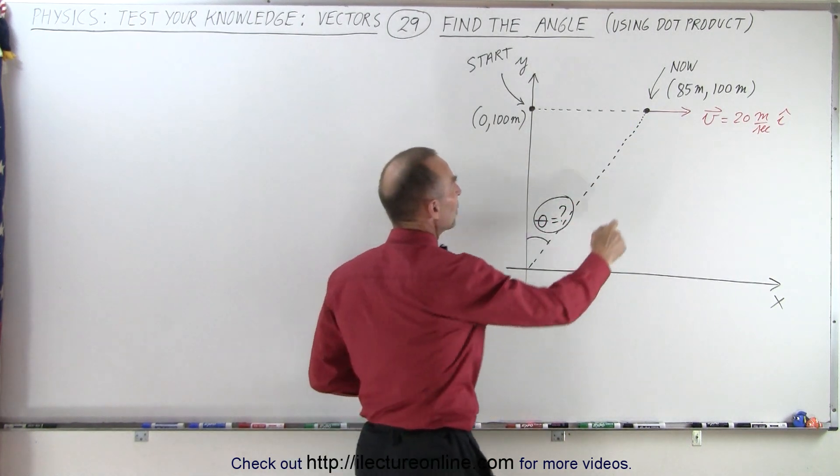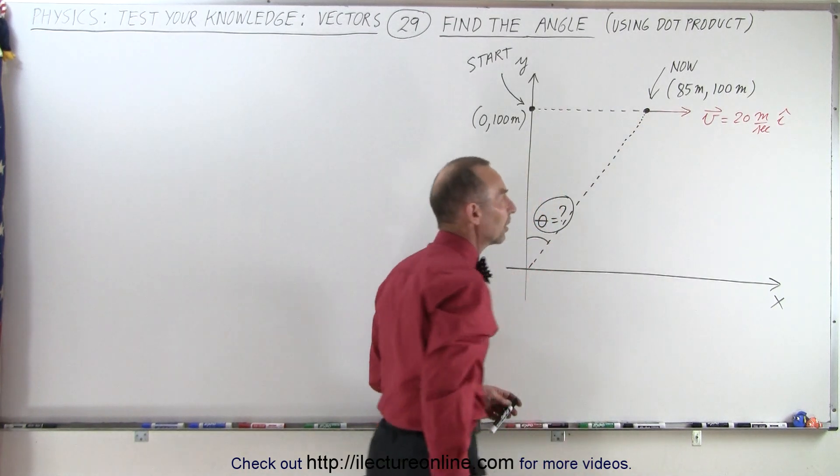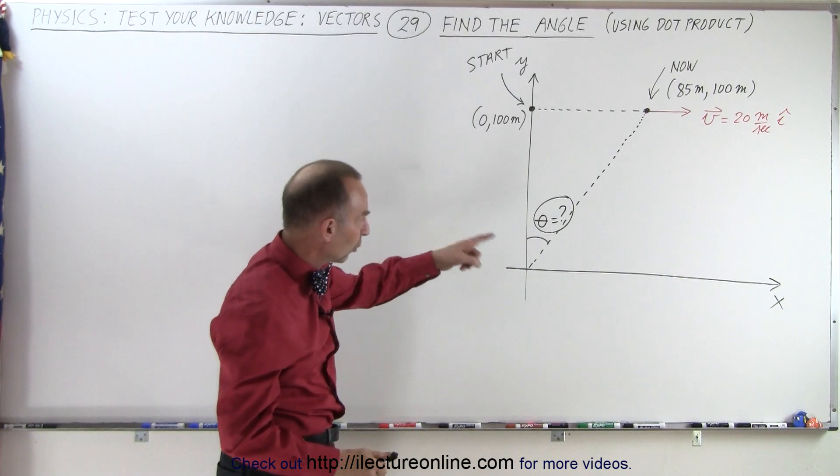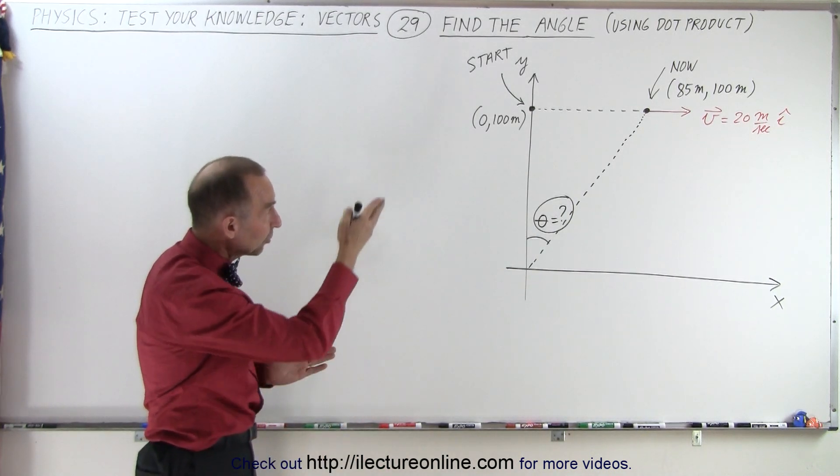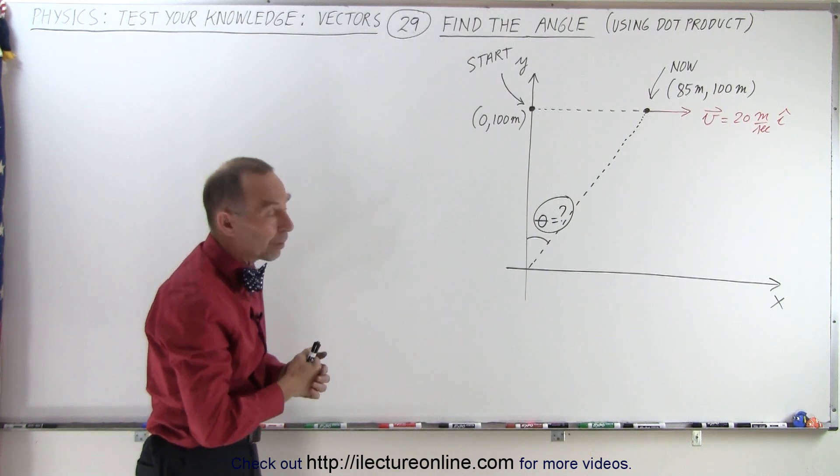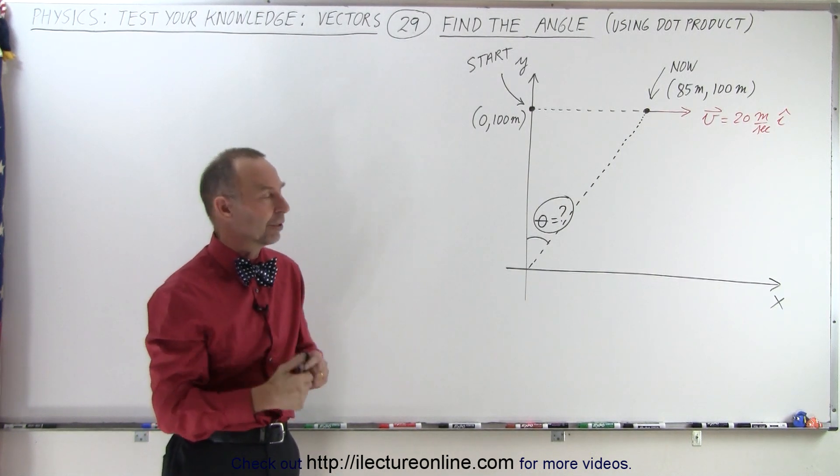At some point in time, it reaches a point where the coordinates are 85 meters in the x direction and 100 meters in the y direction. And the question is, what is the angle between the vertical axis and the vector pointing to the particle where it is now? And we're supposed to use the dot product to figure it out.